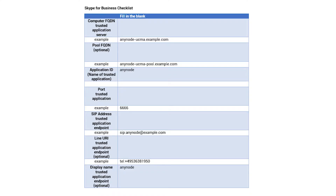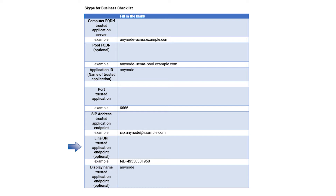You will need the computer FQDN for the trusted application server, the pool FQDN (optional), the application ID — which will be the name of the trusted application — the port for the trusted application, the SIP address for the trusted application endpoint, the line URI for the trusted application endpoint, and the display name for the trusted application endpoint, which is also optional.